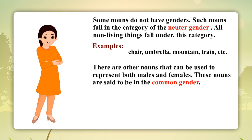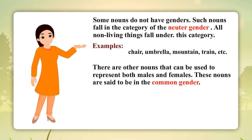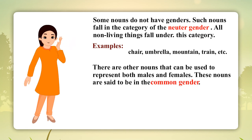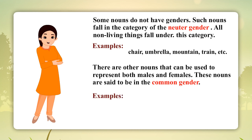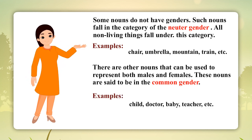There are other nouns that can be used to represent both males and females. These nouns are said to be in the common gender. Examples include: child, doctor, baby, teacher.